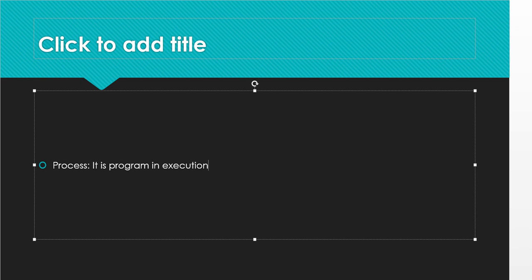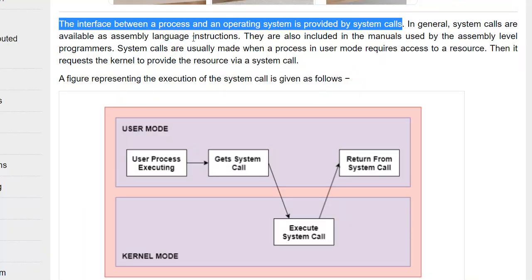Process is a program in execution. System calls are the interface between a process and the operating system. For example, Windows is an operating system; if I run MS Word using that Windows OS, the interface between MS Word and our Windows operating system — those are known as system calls. To use any hardware from the operating system, the system has to call some important methods, and those are known as system calls.